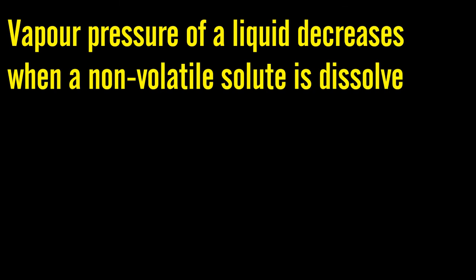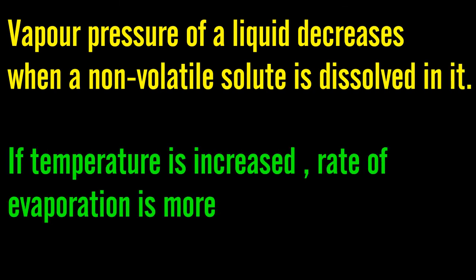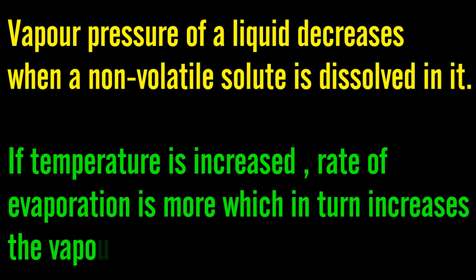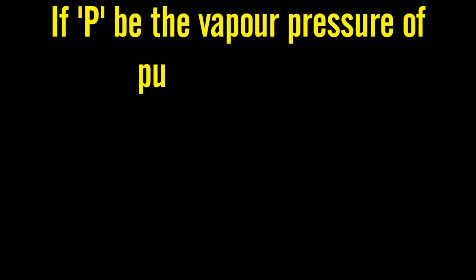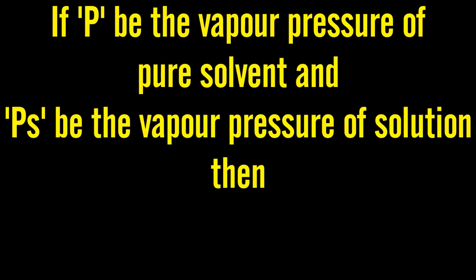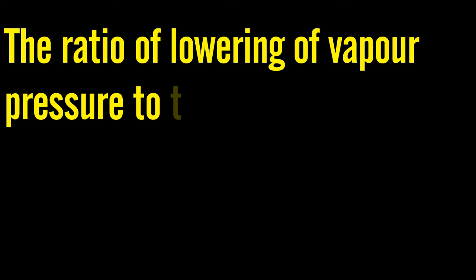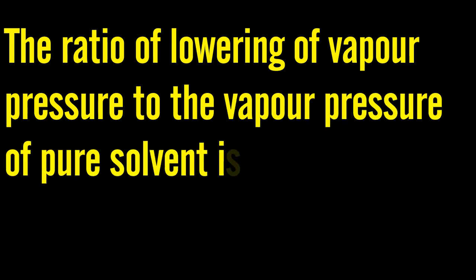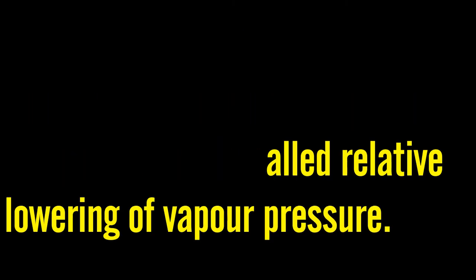Vapor pressure of a liquid is decreased when a non-volatile solute is dissolved in it. If temperature is increased, the rate of evaporation is more, which in turn increases the vapor pressure of the liquid. If P be the vapor pressure of pure solvent and Ps be the vapor pressure of solution, then lowering of vapor pressure equals P minus Ps. The ratio of lowering of vapor pressure to the vapor pressure of pure solvent is called relative lowering of vapor pressure.